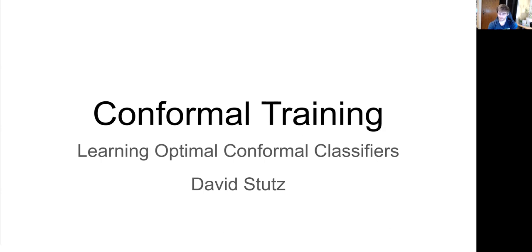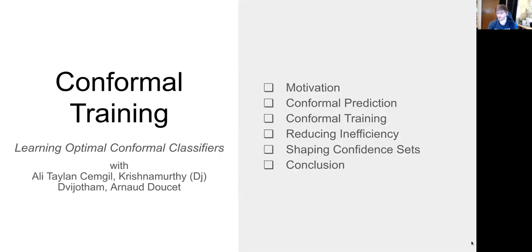I want to talk about conformal training — a way to learn better or ideally optimal conformal classifiers, integrating conformal prediction and distribution-free statistics with deep learning. This is based on a recent preprint and was joint work with Thailand, DJ, and Arnold from DeepMind, done during an internship there. It was also the first time I worked on conformal prediction.